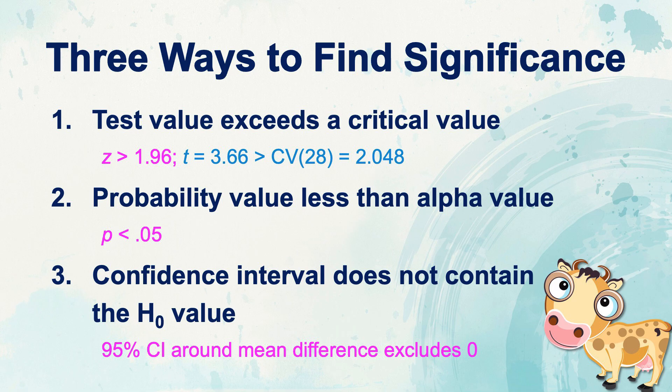A second way to establish statistical significance is by using probability values — this is a model of significance testing. Probability values provide evidence against the null hypothesis; probabilities less than 0.05, or five percent, are routinely taken as evidence of statistical significance. The third way is to examine the 95% confidence interval to determine whether it contains a predetermined value from the null hypothesis. If the confidence interval does not contain that value, then the findings are significant.